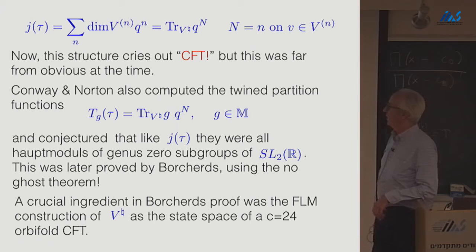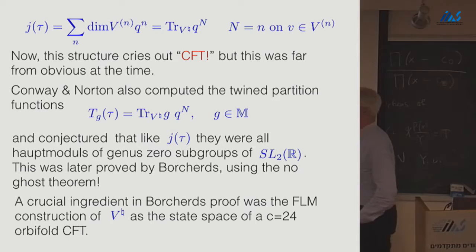So, Conway and Norton, building on this idea, computed what are now called the twined partition functions. If you have some group element g in the monster and it acts on this vector space, you can compute the trace of g on that. This will depend only on the conjugacy class of g and m. I think there are 192 conjugacy classes, so they managed to work those all out. And what they found was that these were all what are called Haupt modules of genus zero subgroups.